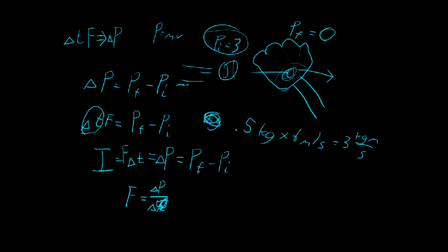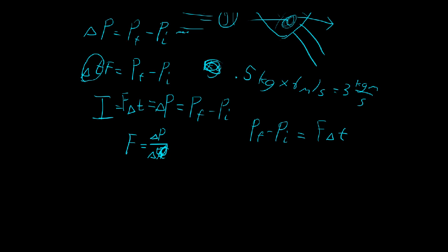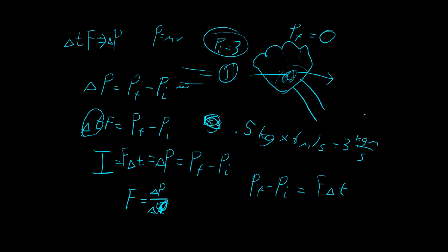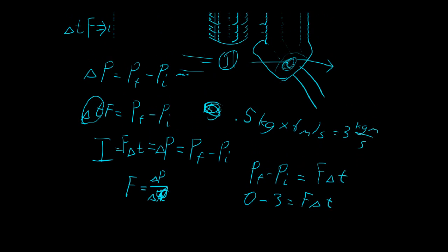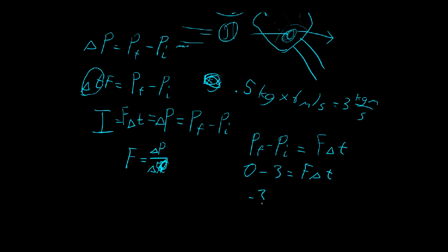So now, let's plug this into our equation. We've got the PF minus PI, and we said that's equal to the force times the time interval, right? That's the force applied by the ball or by the glove times the time interval. The change in momentum was negative three, right? It went down by three.